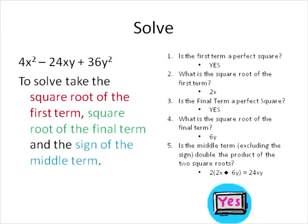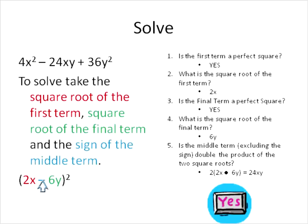Because it's a perfect square trinomial, we're going to take the square root of the first term and put that inside the parentheses. We'll take the square root of the final term, put that in parentheses, and we'll take the sign of the middle term — in this case it's negative. So we'll end up with: 2x minus 6y, inside parentheses, squared. And that is how we would solve perfect square trinomials that have a coefficient in front of the first term. Hope this recording has been helpful for you, and have a wonderful day.